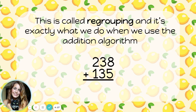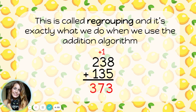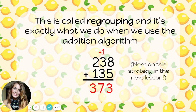This is called regrouping, and it's exactly what we do when we use the addition algorithm. Let's add the ones: eight plus five is 13. Just like before, I can't put a 13 in the ones place. I put down the three ones and carry or regroup ten of them over into the tens place to add a group of ten. Now I have seven tens and three hundreds. More on this strategy in the next lesson.